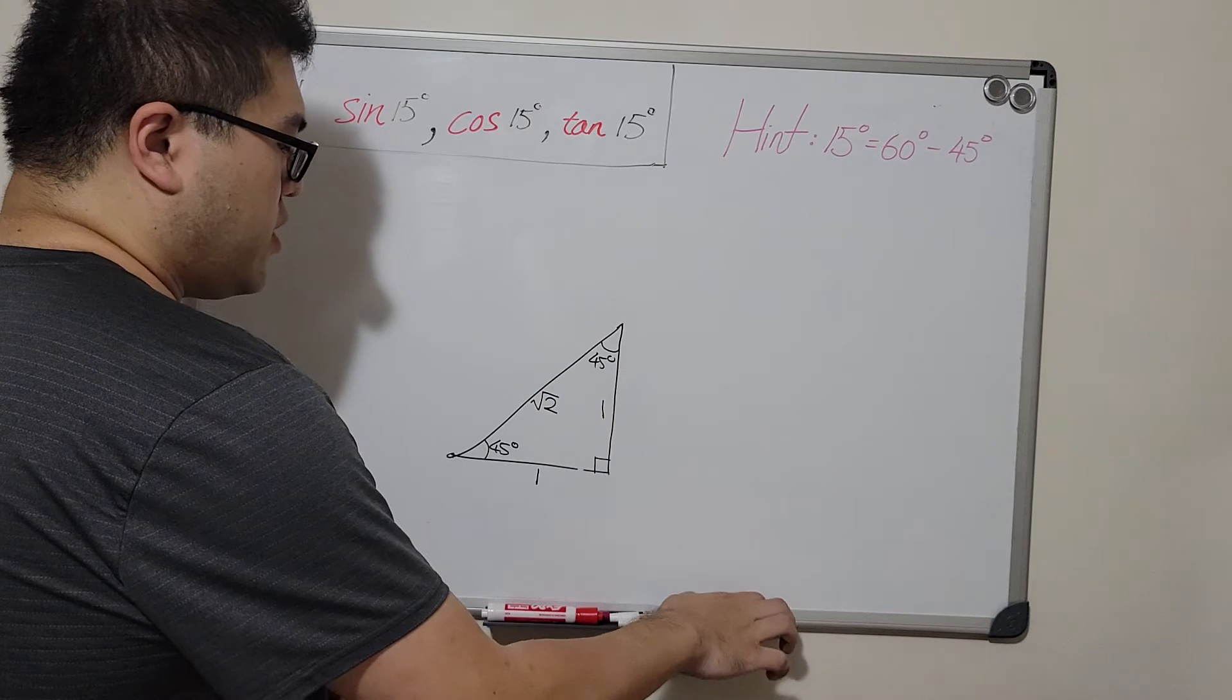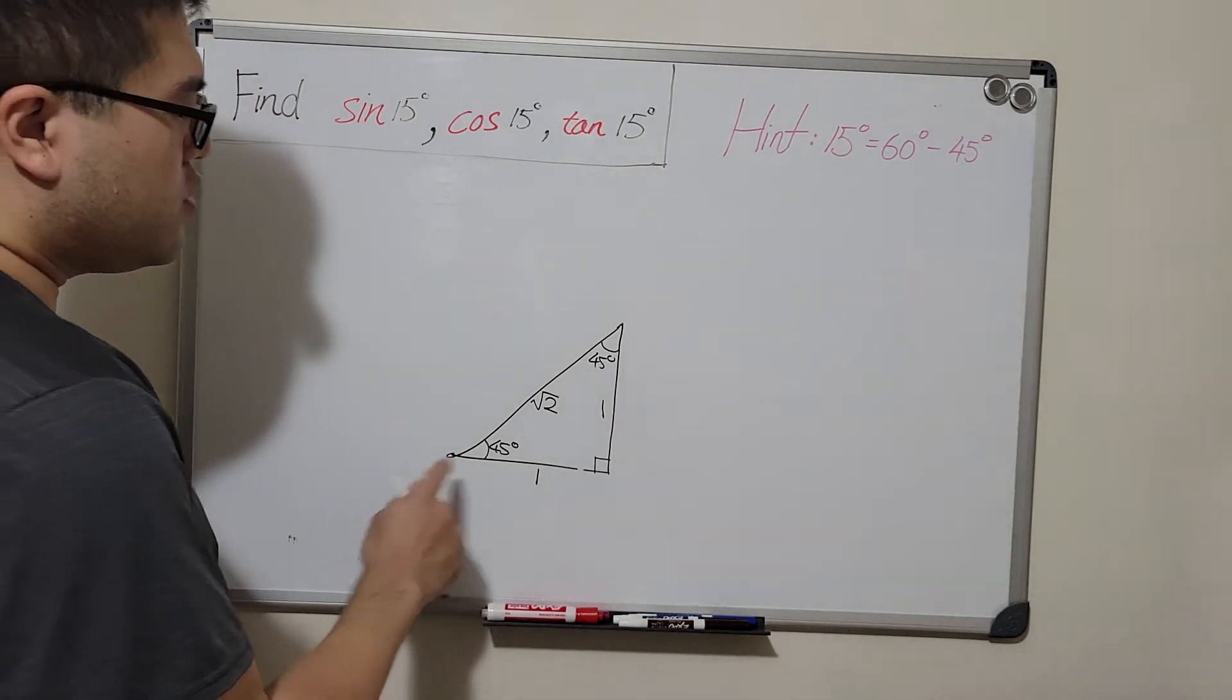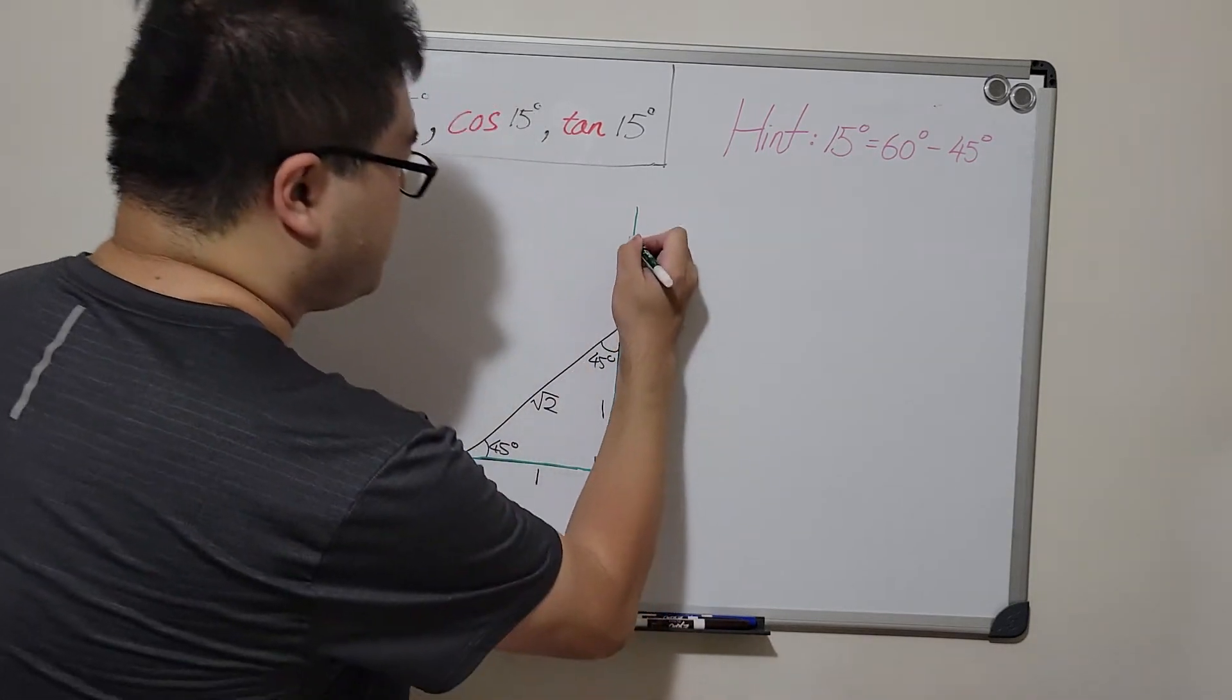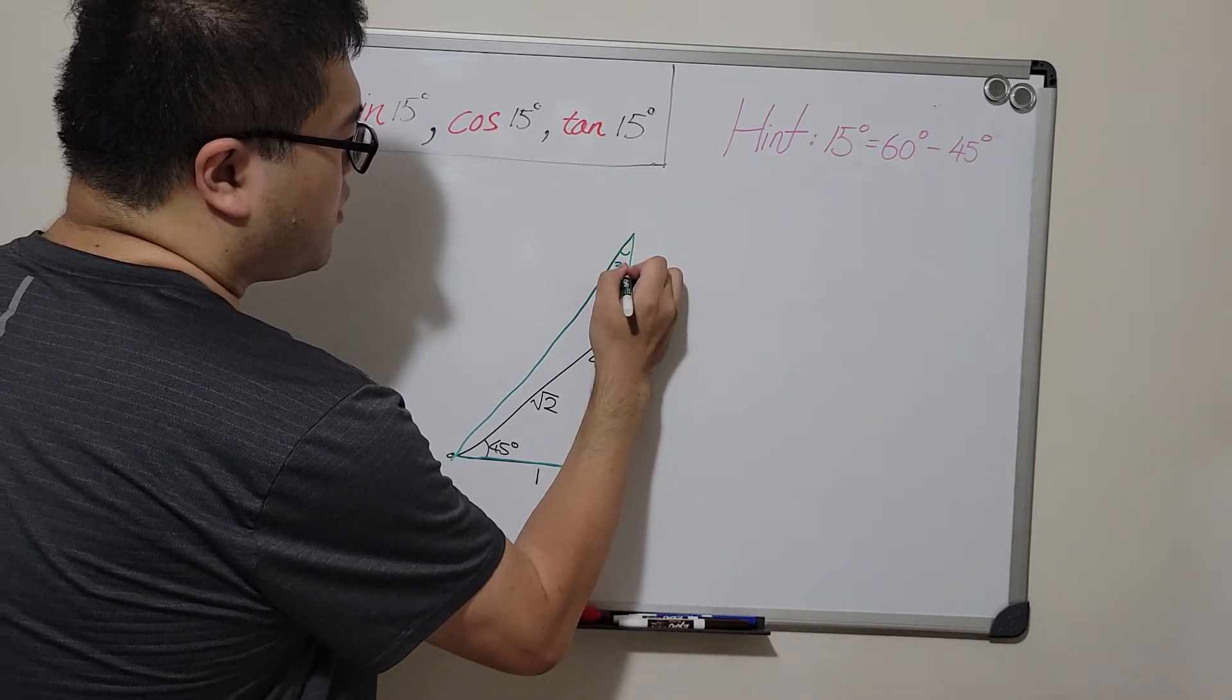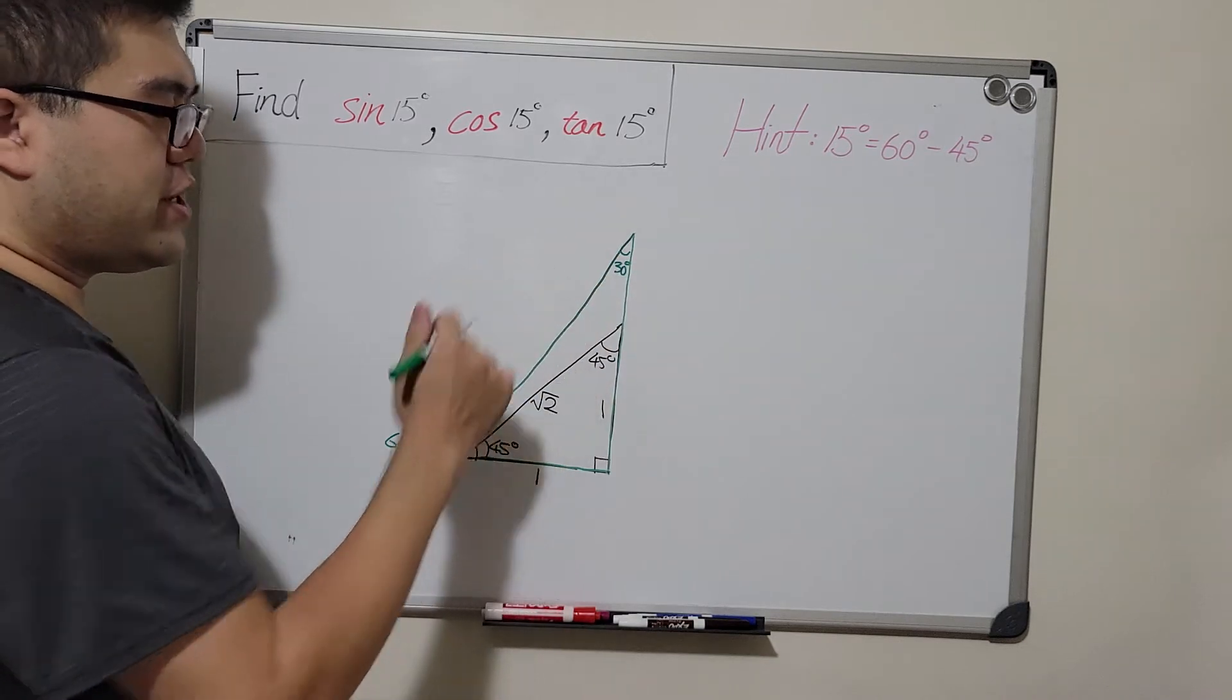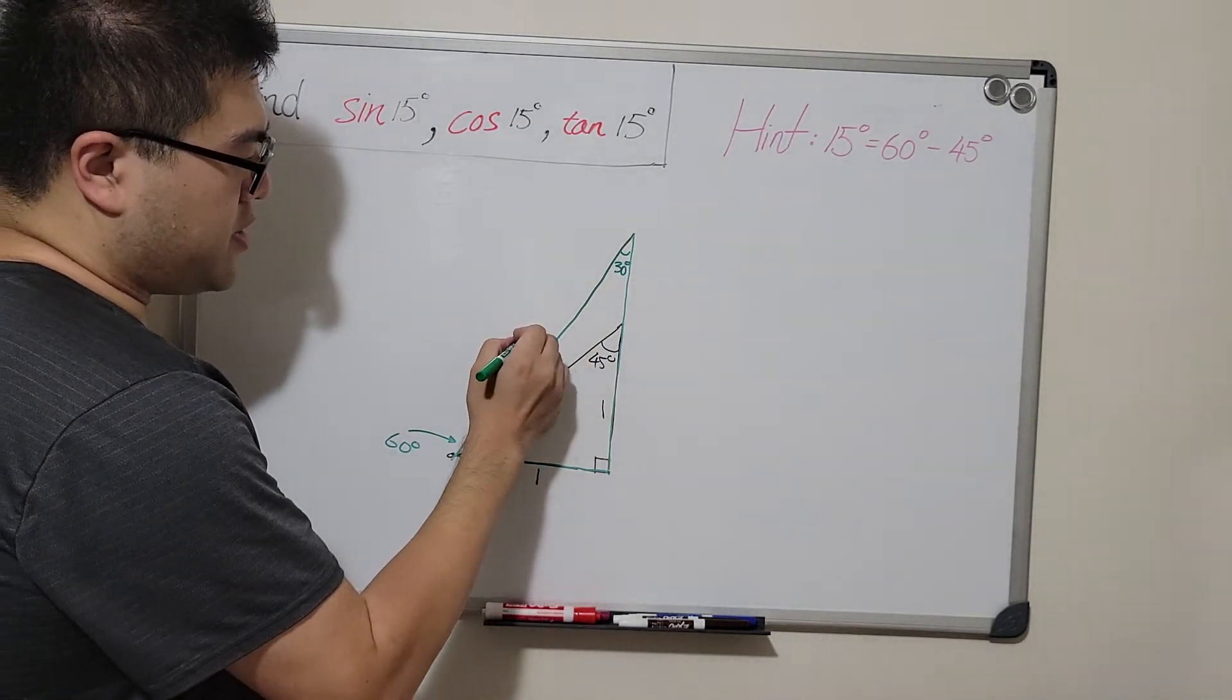And then we're going to draw a right triangle with 30, 60, and 90 degrees using the same base as the right triangle we just had, which looks like this, where the 30 degrees is on top and down here we get the 60 degrees. For this right triangle, we have the following ratio: 1 to square root of 3 for the longer leg to 2, which is the hypotenuse.